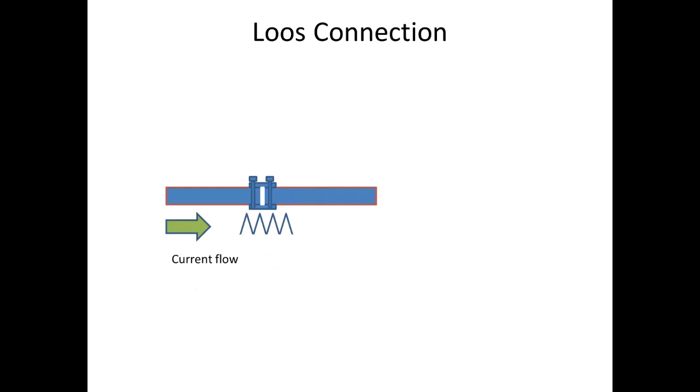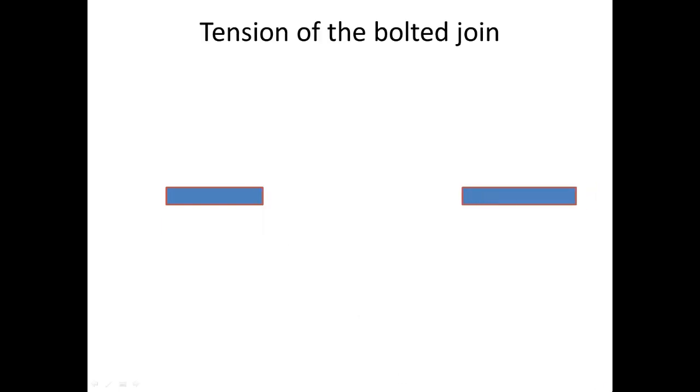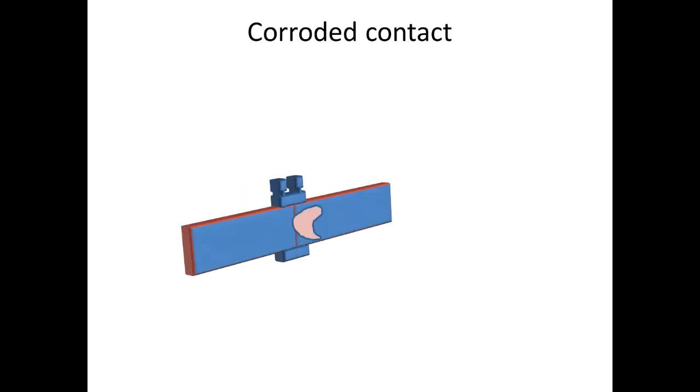We can also find the tension of the bolt. If two conductors are connected tightly but the bolt tension is slightly loose, we can find this by doing this test. We can also find corroded conductors.